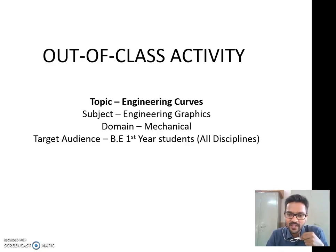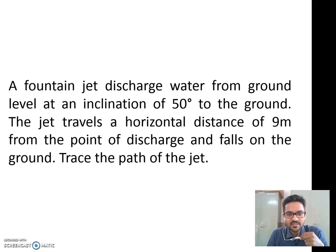So what we are going to do today is we'll take another example, but we are going to solve that with another method. The question is: a fountain jet discharge water from the ground level, with an inclination of 50 degrees, and that jet travels a horizontal distance of 9 meters from the point of its discharge and falls on the ground. So we have to trace the path of the jet.